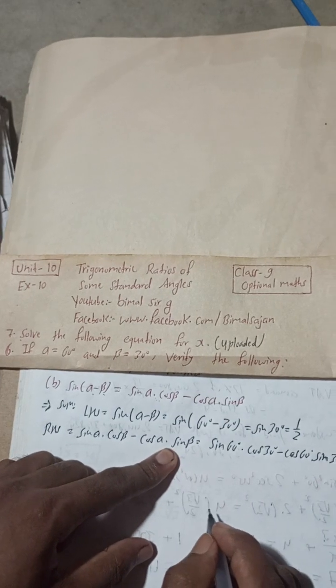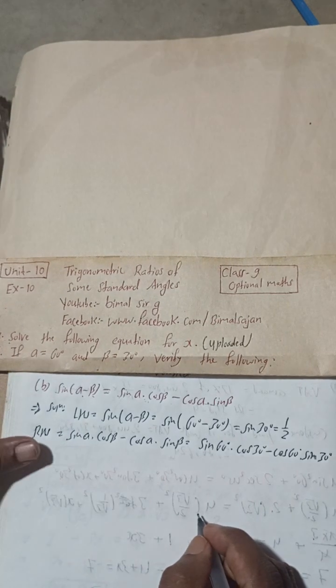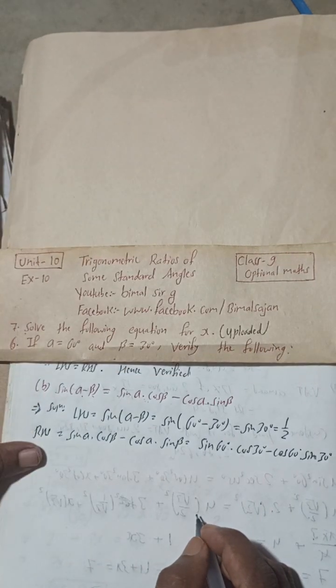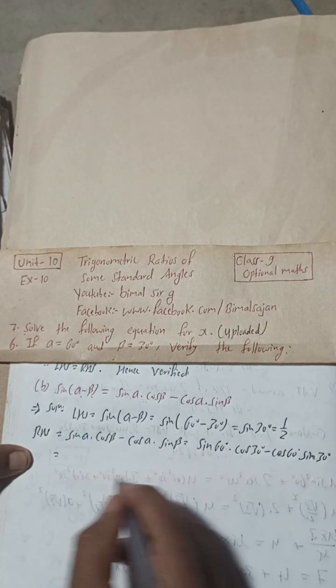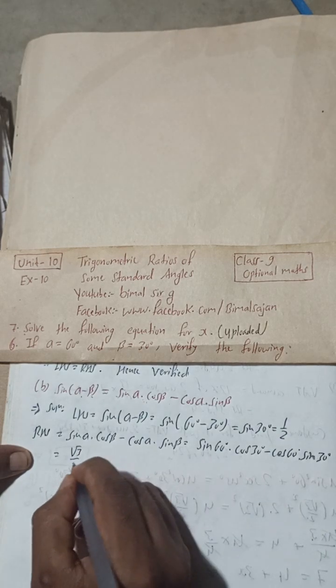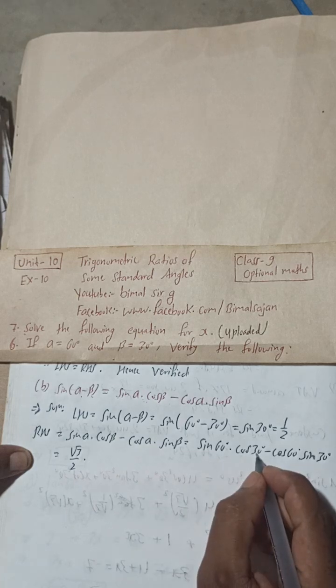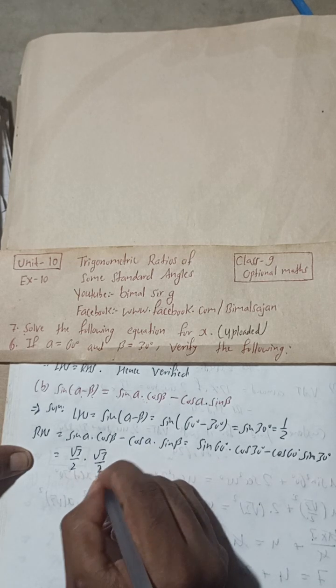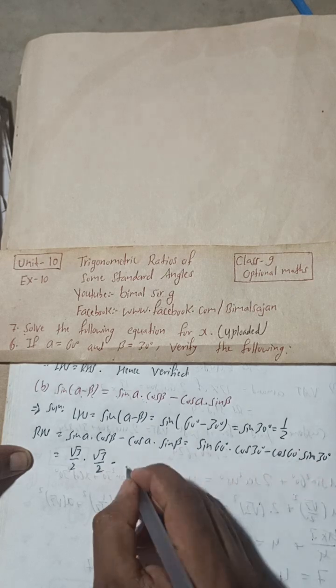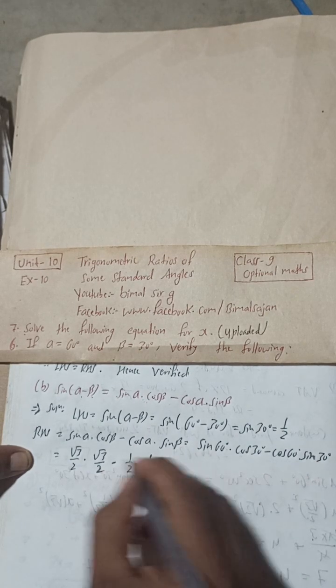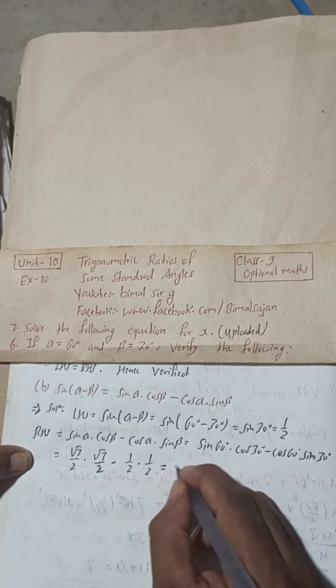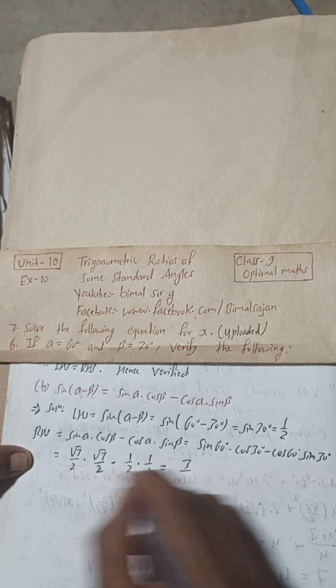Now this is sine 60. Sine 60 value is root 3 by 2 into cos 30 value, which is root 3 by 2, minus cos 60, which is 1 by 2, into sine 30, which is equal to 1 by 2. So root 3 times root 3, that will be root 3 squared, that is 3 by 2 times 2 is 4.